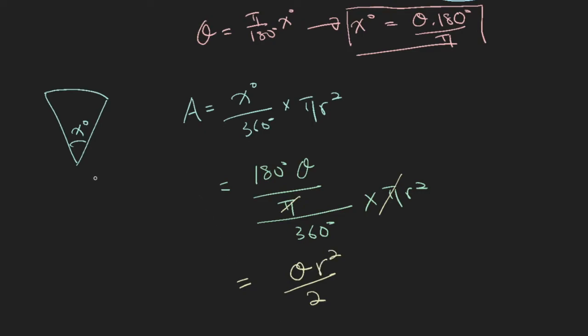So the area of this pizza slice, area of a sector, is simply equals to half times theta times R square. So this is another formula that you probably want to memorize.